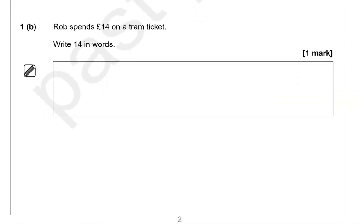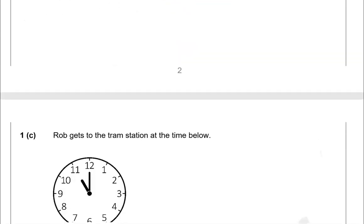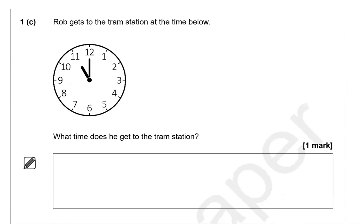Rob spends £14 on a tram ticket. Write 14 in words. Rob gets to the tram station at the time shown. Looking at the shorthand, that is at 11, and the longhand is at 12. So this shows it's 11 o'clock, because the shorthand tells us the hour.